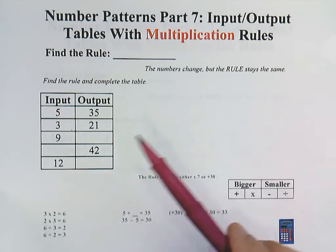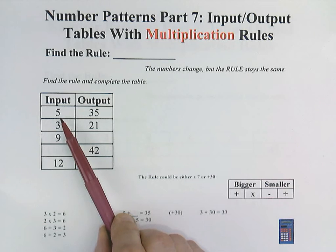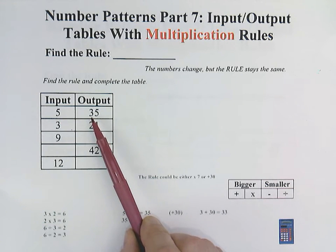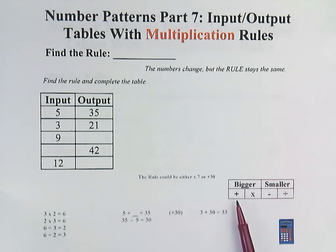And our job is to figure out what is happening. We start with 5, but it ends with 35. And that's called the rule. For example, to get from 5 to 35, we're adding or we're multiplying, subtracting or dividing, and then by how much.